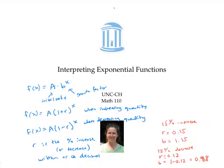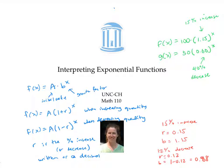These observations help us quickly interpret exponential functions. For example, here we have an initial value of 100 and a 15% increase, and here we have an initial value of 50 and a 40% decrease.